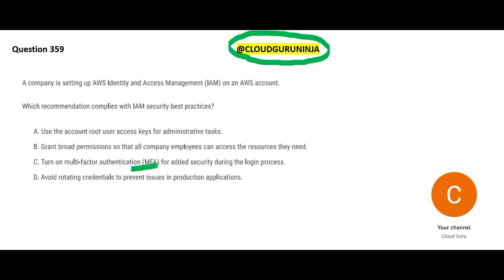Suppose you have a bank account. You have credentials comprising a username and password. Once you log in, you are given an OTP on your mobile phone. For a high-value transaction or fund transfer, it will also ask for the number behind your debit card — there's a grid with alphabets A to H, each with a number, and you enter that. That is multi-factor authentication — like three factors.